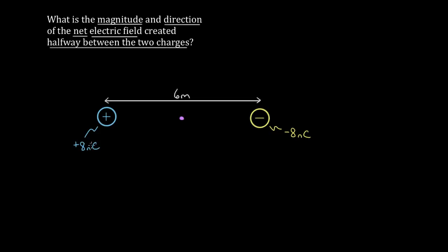You've got a positive eight nanocoulomb charge and a negative eight nanocoulomb charge, separated by six meters center to center. What we want to know is the total electric field they both create right at that halfway point. Each charge creates an electric field there, and if you add those electric fields as vectors, what total electric field do you get?